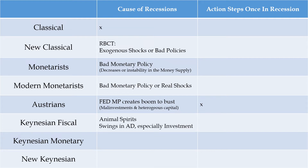Keynesian fiscal policy advocates talk about the idea of animal spirits — the idea that we follow herd-like behavior when it comes to aggregate demand and especially investment. Consumers are driven by consumer confidence and they see other investors and things in the economy as moving ahead or falling behind. We're not really rationally calculating the potential payoffs to investment via interest rates and net present values; instead we follow the psychology of the masses around us.